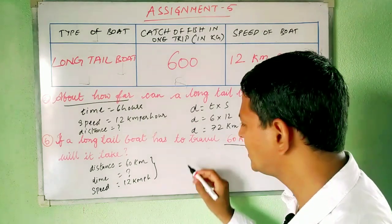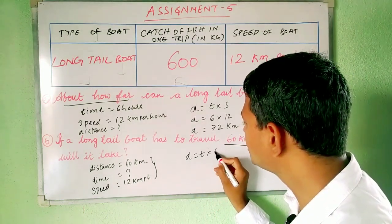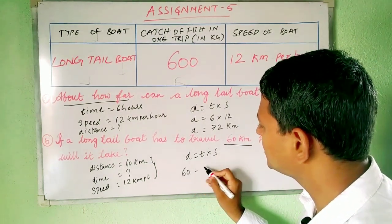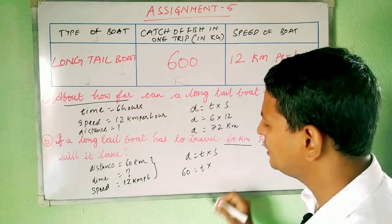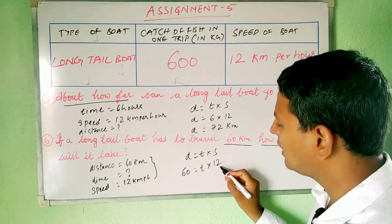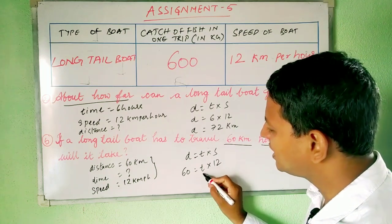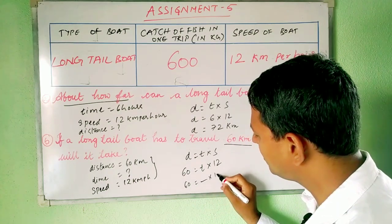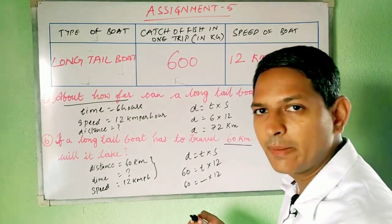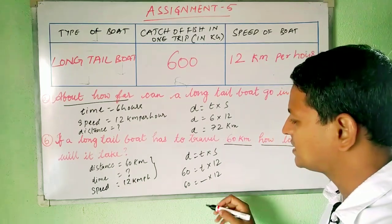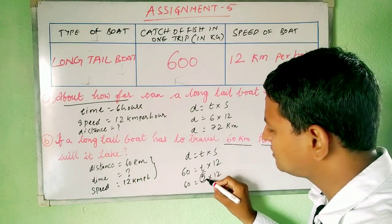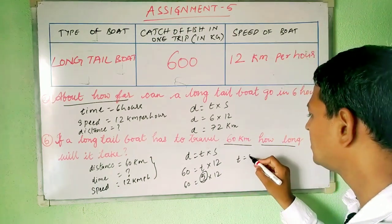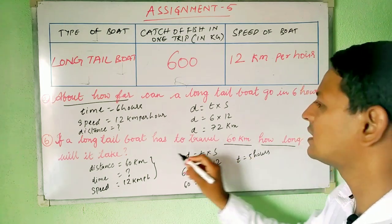We know the relation: distance is equal to time multiplied by speed. So distance is 60, time we don't know, and speed is 12. So 12 multiplied by which number gives 60? 12 times 5 equals 60, using the 12 times table. So time is 5, and time is measured in hours. It takes 5 hours for this long tail boat traveling at 12 kilometers per hour to cover 60 kilometers.